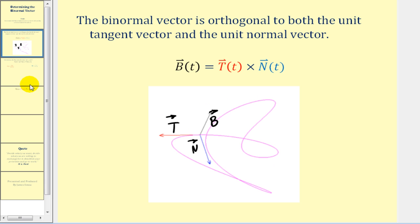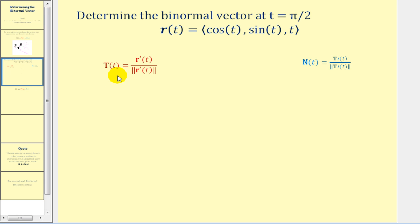So let's go ahead and see if we can determine a binormal vector. Here we want to determine the binormal vector at t equals pi over two for the given vector valued function. We know we have to cross T(t) and N(t), so we first have to determine these two vector valued functions.